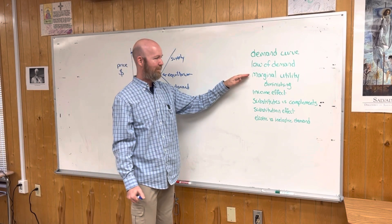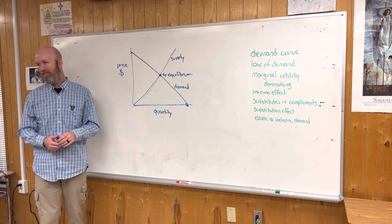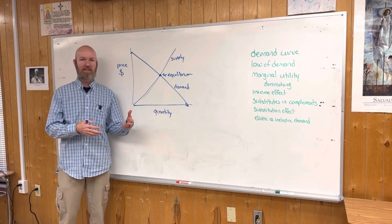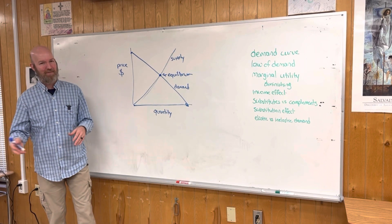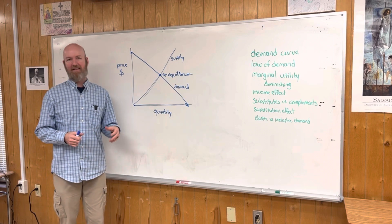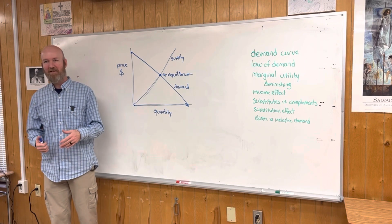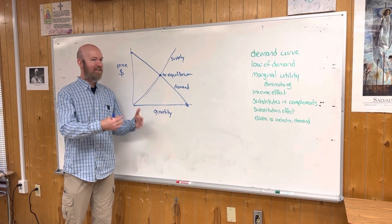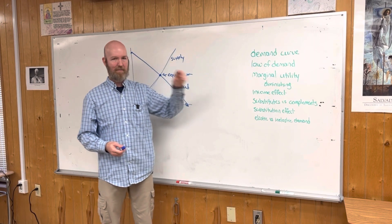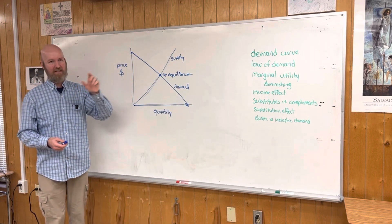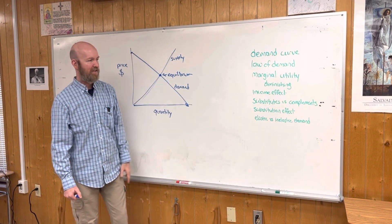Now, marginal utility. Marginal utility is the enjoyment or satisfaction that you get from having more of something. So if I give you the choice of having one chocolate chip cookie or three, most people would choose three. But once you've had like 10 chocolate chip cookies, is that 11th one really going to do much more for you? No. At a certain point, you end up not really getting more enjoyment out of it — and that's diminishing marginal utility. Each additional one gives you some more satisfaction, but eventually you get diminishing marginal utility — less satisfaction from each one.